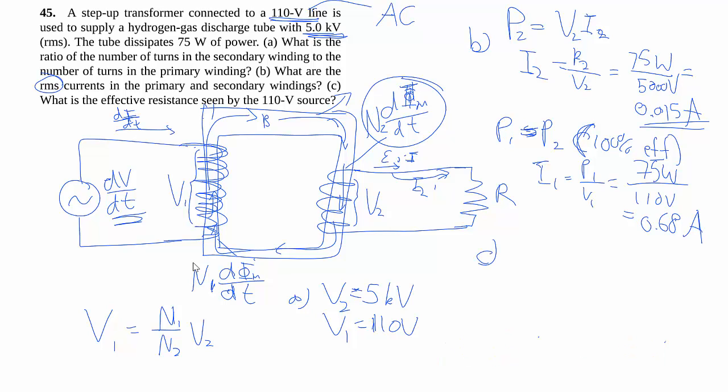And then for part C, they want the effective resistance seen. So resistance again, it's just V over I. And because of the way the transformer changes the current and the voltage, the ratio is going to end up being different. So instead of whatever this R is, it has changed slightly to be 161 ohms. So the math itself is actually quite simple.